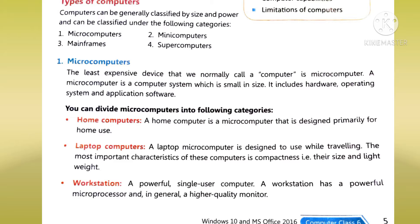First is the home computer. A home computer is also a microcomputer which we use for home work, such as saving people's contacts, notes, and lists. All of these we do using a home computer.